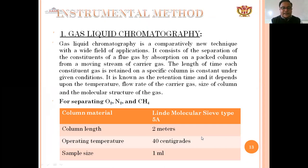Another instrumental method is gas-liquid chromatography, a comparatively new technique with a wide field of application. It consists of separation of the constituents of a flue gas by absorption on a packed column from a moving stream of carrier gas. The length of time each constituent gas is retained on a specific column is a constant under given conditions, known as retention time. This depends on temperature, flow rate of carrier gas, size of the column, and the molecular structure of the gas.